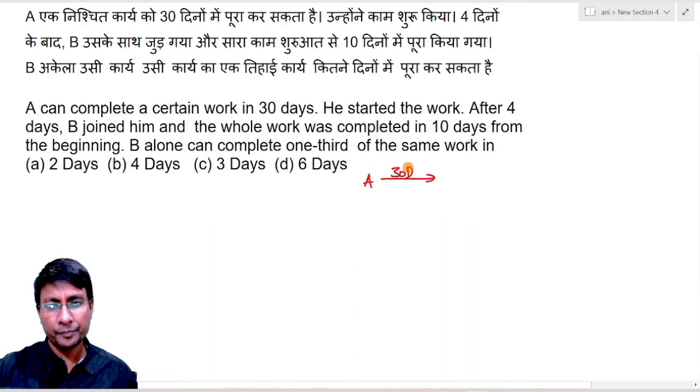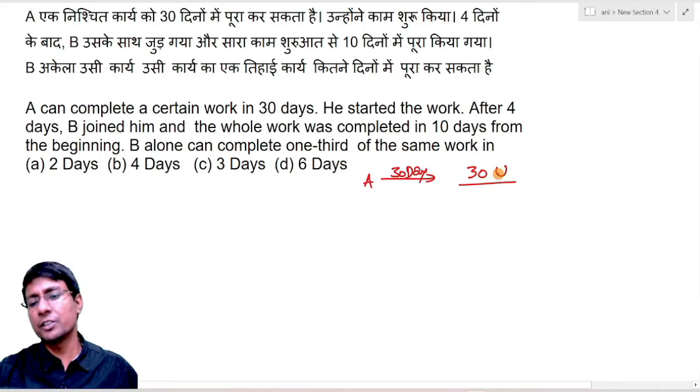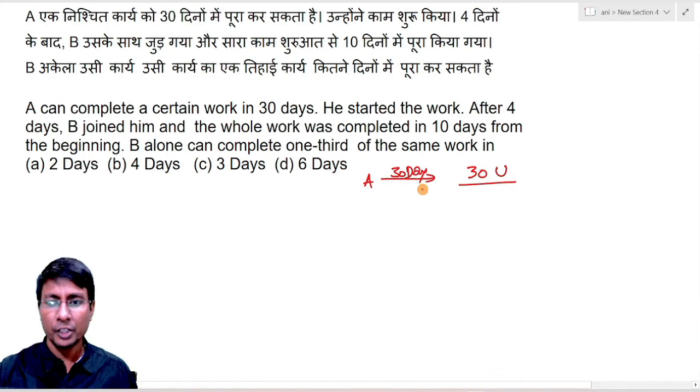So assume that total work done is 30 units. You can assume anything. We assume work in multiples of days or LCM so that we don't have fractional calculations involved. So if A does 30 units in 30 days, then A's per day efficiency will be one unit per day.